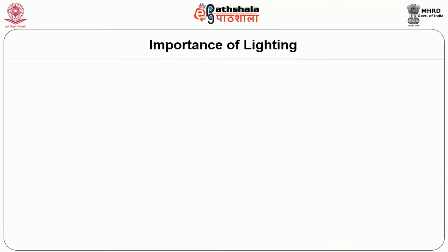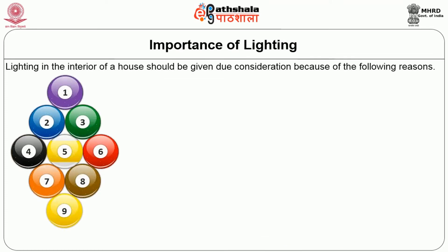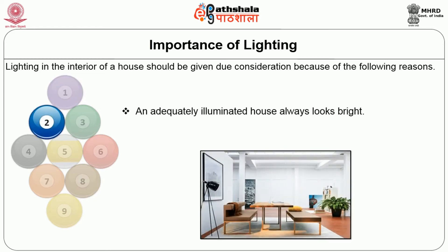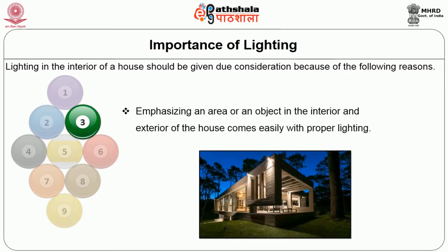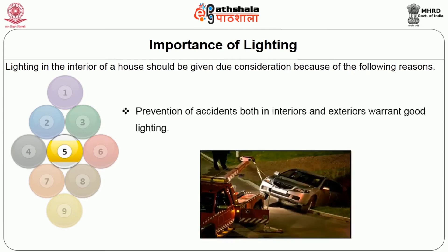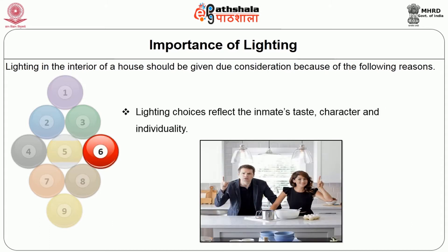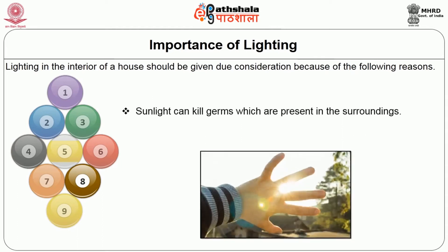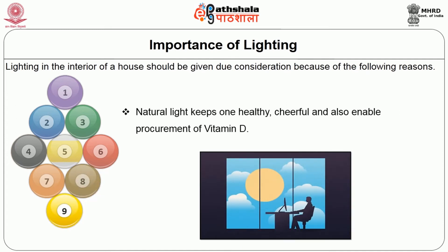Lighting in the interior of a house should be given due consideration for the following reasons: seeing things properly and clearly requires ample lighting, which further enhances visibility; an adequately illuminated house always looks bright; proper lighting easily emphasizes an area or object; work productivity can be improved with adequate lighting; good lighting prevents accidents both indoors and outdoors; lighting choices reflect the inmate's taste, character and individuality; colour schemes in interiors receive attention only in properly placed lighting; and above all, sunlight can kill germs, keeps one healthy and cheerful, and enables procurement of vitamin D.